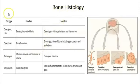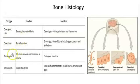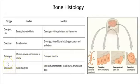The next topic is histology — the cells of bone. There are four main cells. First, osteogenic cells are stem cells capable of giving rise to other cell types, such as the osteoblast. The osteoblast is the cell that builds bone. Next are osteocytes — osteoblasts that have become trapped in the bone matrix once they have built the bone. Finally, osteoclasts destroy and reshape bone.